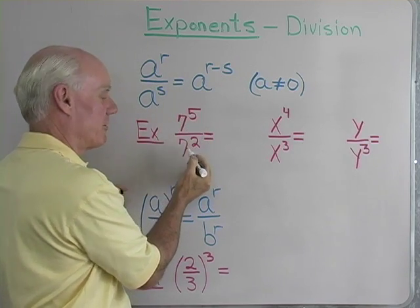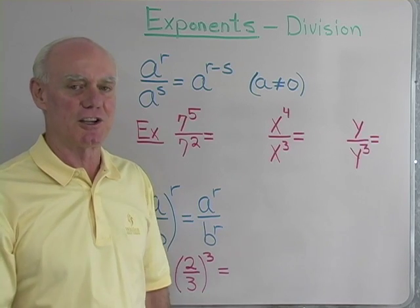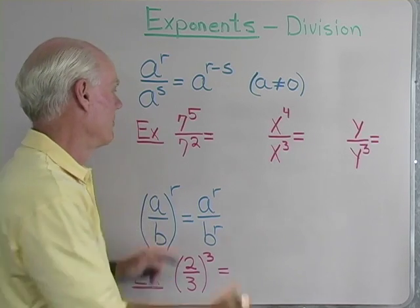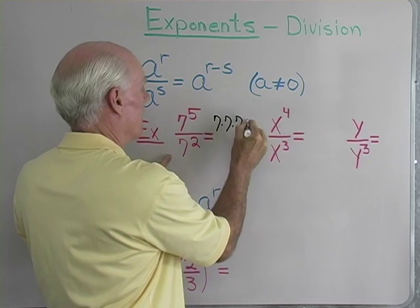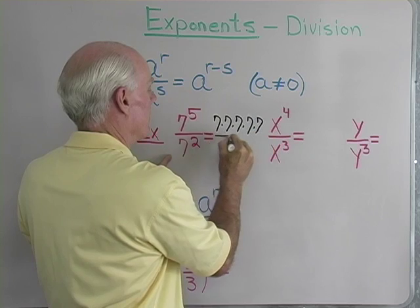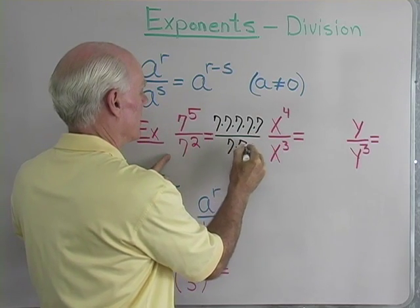For instance, if I have 7 to the 5th over 7 to the 2nd, let's just write this out the long way so that you can see that this property really is justified. 7 to the 5th power would be 7 times 7 times 7 times 7 times 7. 7 to the 2nd power, 7 times 7.